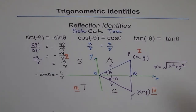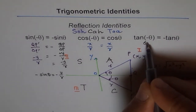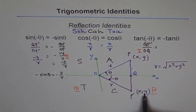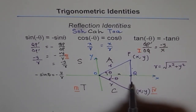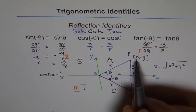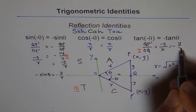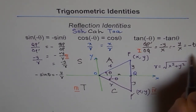Another way to prove tan(−θ): in quadrant 4 with triangle OQP-dash, tan of minus theta equals QP-dash divided by OQ. QP-dash is minus y and OQ is x, so tan(−θ) = −y over x. Since y over x is tan theta, we can write this as minus tan theta. That proves the third identity using coordinates directly.